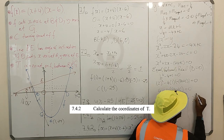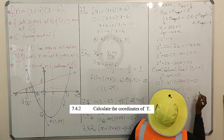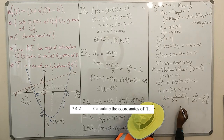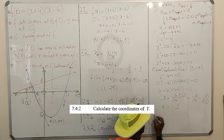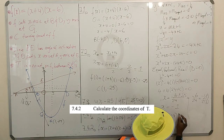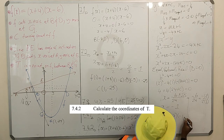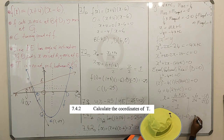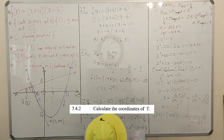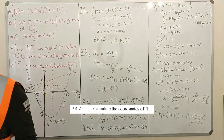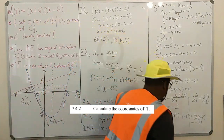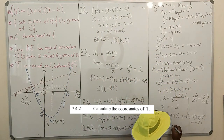With x = −1, we find y: f(−1) = (−1 + 4)(−1 − 6) = 3 × (−7) = −21. Therefore the coordinates of point T are (−1, −21).